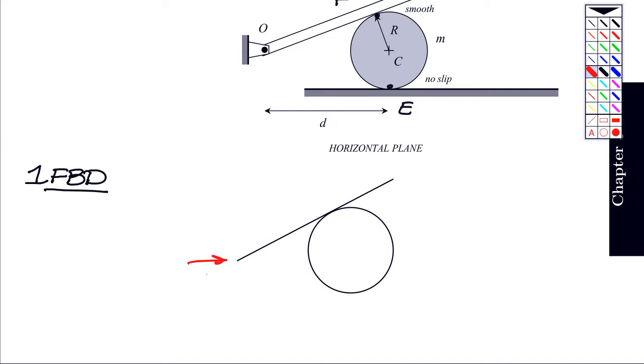What forces do we have? We've got OX and OY, the reaction forces there at the pin. There's a normal reaction force N at that contact point E. There's a friction force, and then there is the applied force F, which the problem says is always perpendicular to the bar applied there at point A.